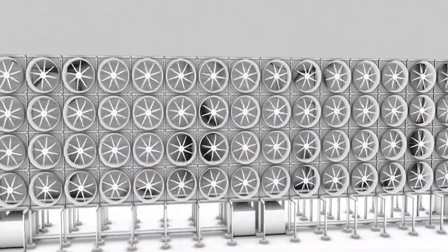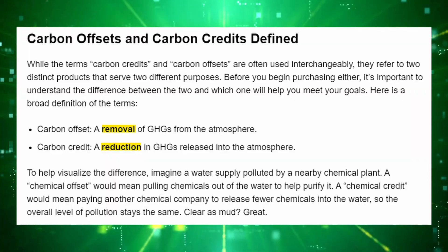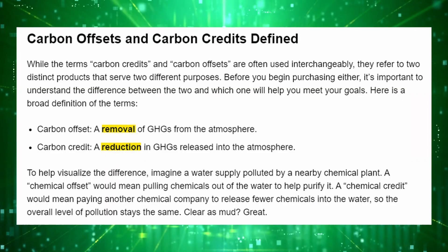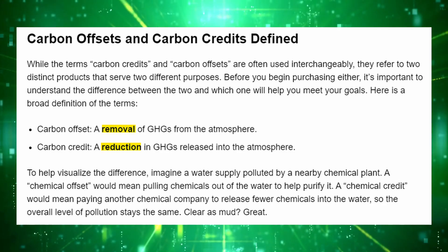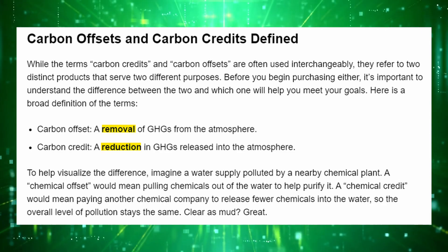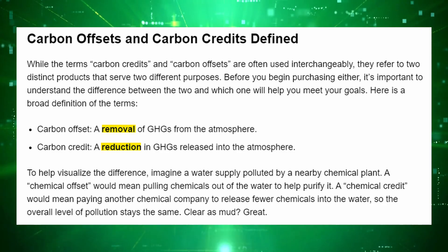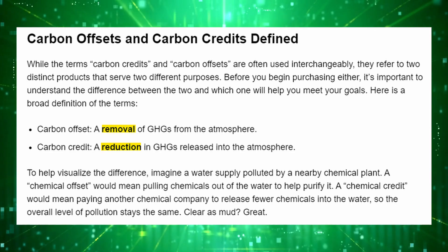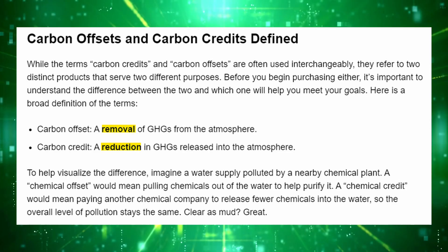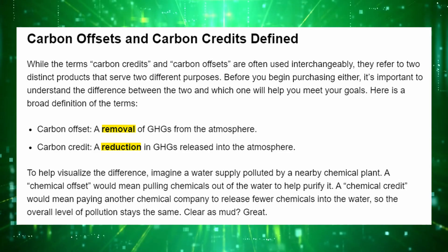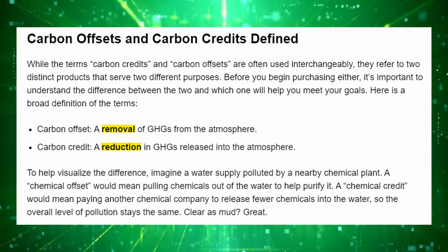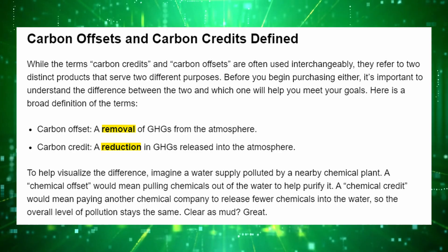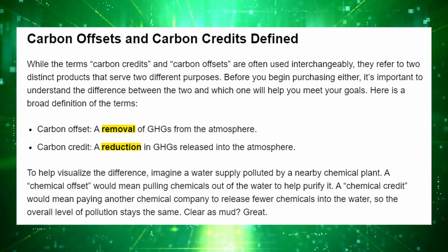Within these groupings, project types will either be avoiding the release of emissions or removing emissions from the atmosphere entirely — we call those avoidance or reduction projects. While carbon credits as a term can be used interchangeably, a project that avoids emitting CO2 creates carbon credits, while a project that actually sequesters CO2 creates carbon offsets.